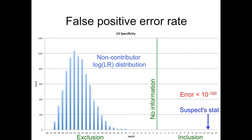We also looked at the chance of a false positive error. On the x-axis we see the number of zeros in the match statistic, or the log LR. The y-axis shows the frequency of the non-contributor log LR distribution. The histogram shows the tremendous exclusionary power of this genotype — the separated genotype has an average of around negative 20 zeros, meaning 1 over 1 followed by 20 zeros. The suspect statistic is out at around 13 zeros, and the chance of a false positive is extremely small, less than 1 over 1 followed by 100 zeros.